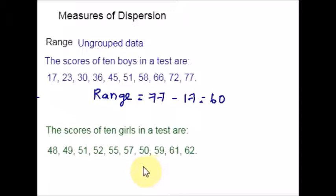In similar way, we can find the Range for part B, the scores of 10 girls. Here, the lowest score is 48 and the highest score is 62. So the Range is 62 minus 48, which equals 14. Now, let's analyze the answers for part A and part B. We find that the scores of boys are widely spread. The scores of boys vary much, but the scores of girls do not vary much. Thus, the variability of the scores of boys is more than the variability of the scores of girls.